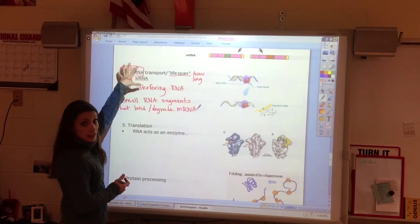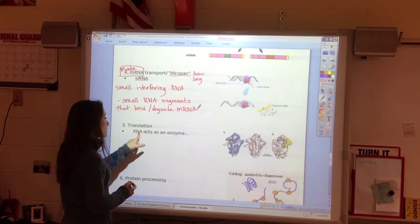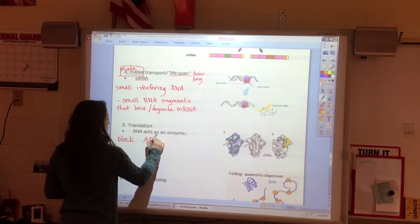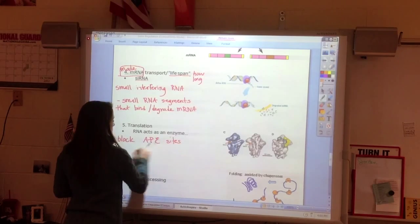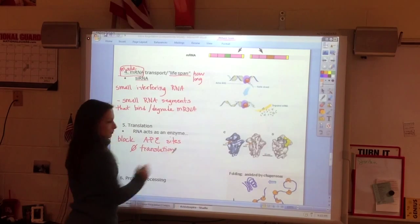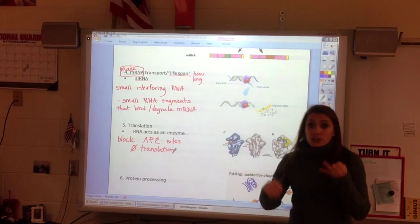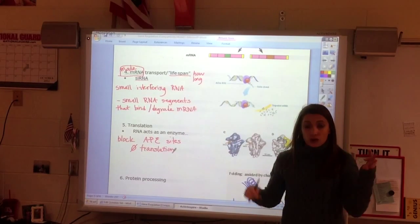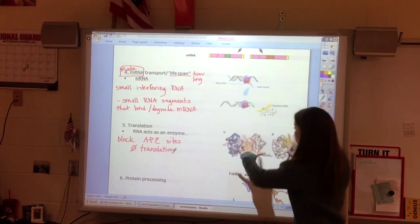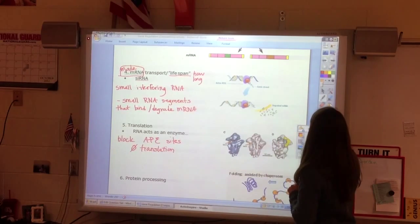Now, real quickly, because RNA acts as an enzyme, if I block the active sites, I won't have translation. Easy as that. So I can block it at the DNA level, before transcription, during transcription, after transcription. While the mRNA is being transported, I can block it at translation. I can somehow damage the ribosome or block the ribosome.